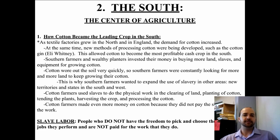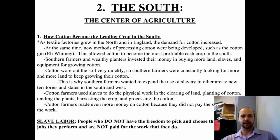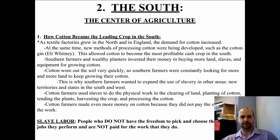Cotton is the reason why Southern farmers wanted to expand the use of slavery in other areas, like the west — all these new territories in the Missouri Compromise area. They also wanted to expand slavery into the northern parts of the west, above that 36°30' line.